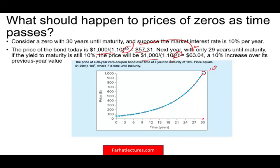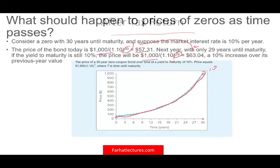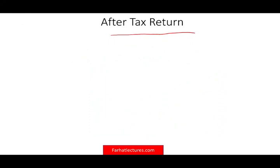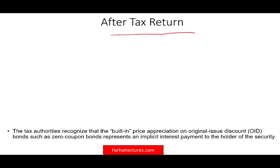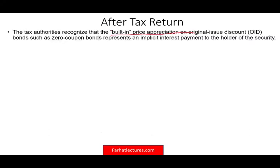So after 30 years, this bond starts at $57.31, and if you keep it for 30 years you will get your $1,000. Now, what happens to those OIDs — original issue discount bonds? My tax students always find this topic tricky because it's always a tricky question.